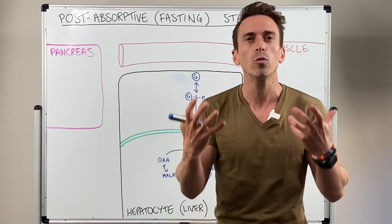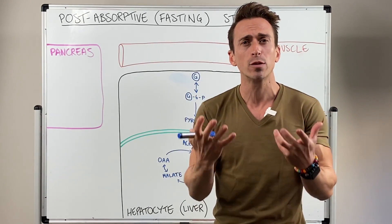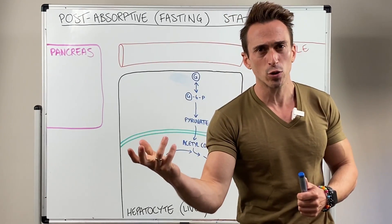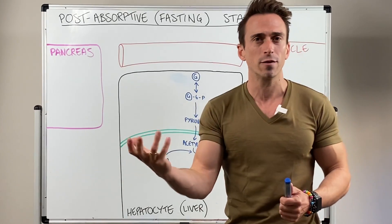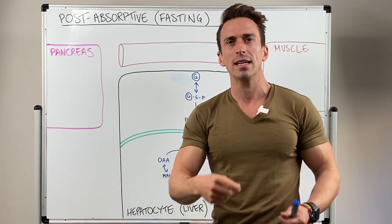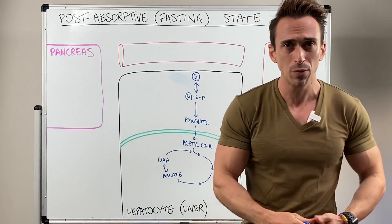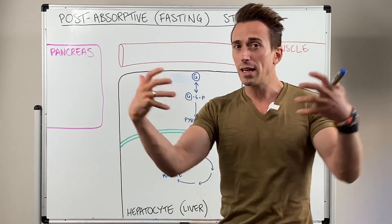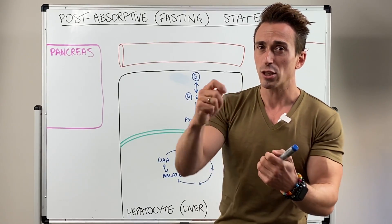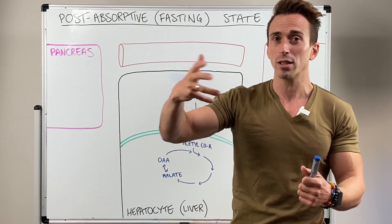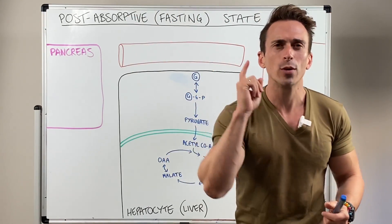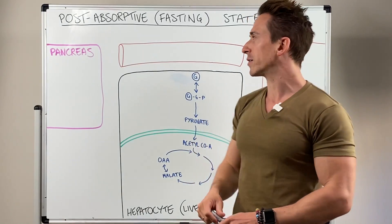Our brain only wants carbs for energy. Now if you think about other energy sources like proteins and fats and their derivatives like amino acids, fatty acids, and glycerol, they all feed into the processes that can turn into glucose or a glucose substrate for energy. So we need to look at glucose itself.